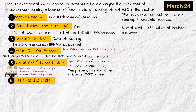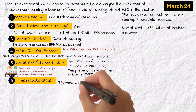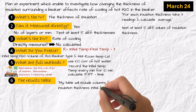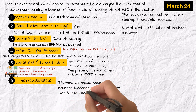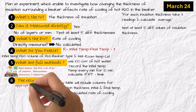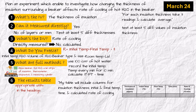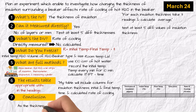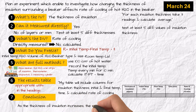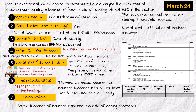Number six: the results table. My table will include columns for insulation thickness, initial and final temperature, time, and calculated rate of cooling, with appropriate units in the headings. Set up your table exactly like this. Number seven: conclusion. Link the IV to the DV in one sentence — as the thickness of insulation increases, the rate of cooling decreases. Gather all of these, write in paragraph form, pause the video and check the mark scheme. Full marks in your bag.